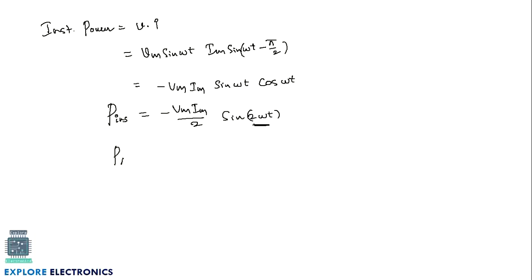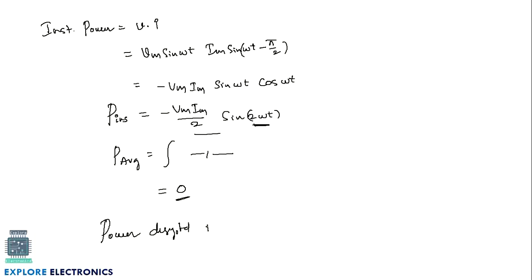Calculating the average power by integrating this expression over a full cycle gives zero, because of the sin(2ωt) term. This means the power dissipated in the inductor is 0. Comparing this with a resistor where average power dissipation is Vm Im / 2, the inductor dissipates no power. In the next video, we will see how AC voltage is applied to a capacitor.